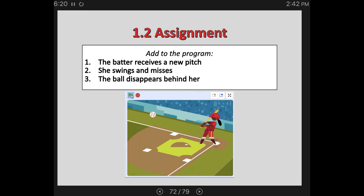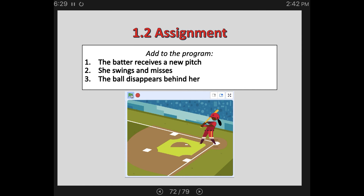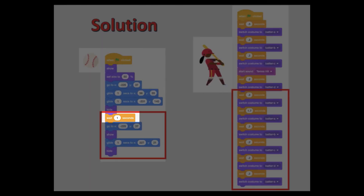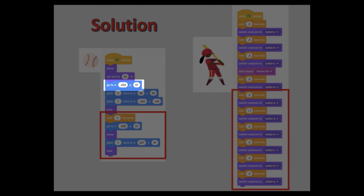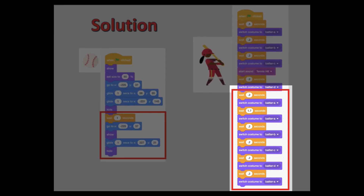Here is your assignment. I would like you to add on to this program — I want the batter to receive a new pitch, she swings, and this time she misses the ball and it disappears behind her. Pause the video, get to work on that, and when you're ready, hit play and I'll talk about the solution. For my baseball, I added a wait of one second to give it a moment, then gave it a starting coordinate — the same as my original starting coordinate so it feels like it's coming from the same place, like it's being pitched again. Then I show the ball, have it glide to a new spot behind my batter because she misses the shot, and then hide the ball so it looks like it's disappeared into the distance. For my batter, I had her move through those costume changes again, but had to really play with the timing to make sure everything synced up with my ball.